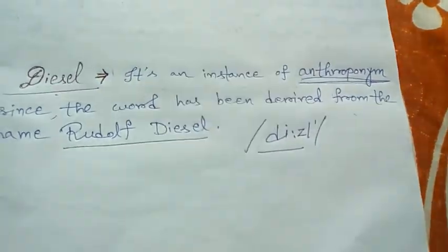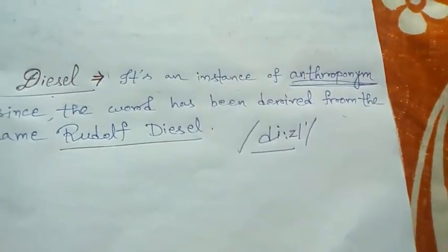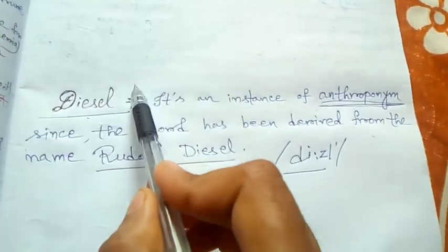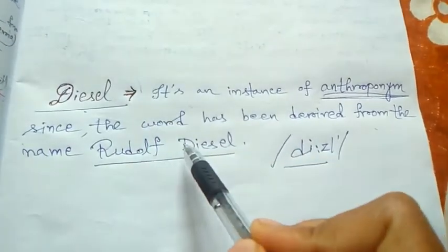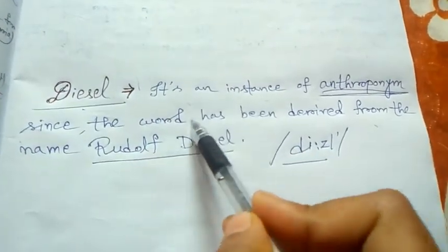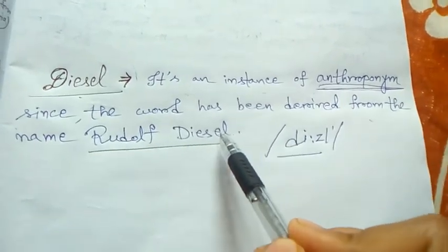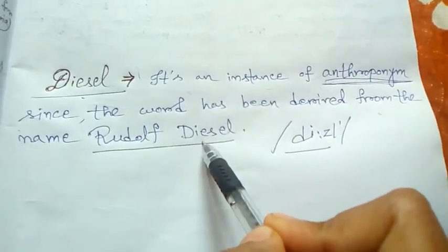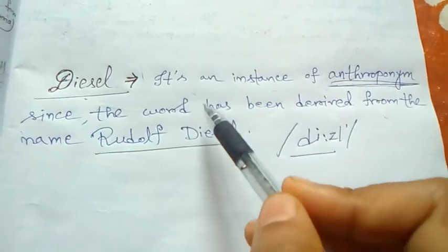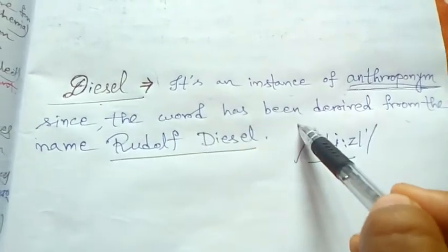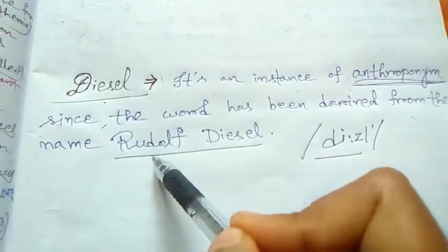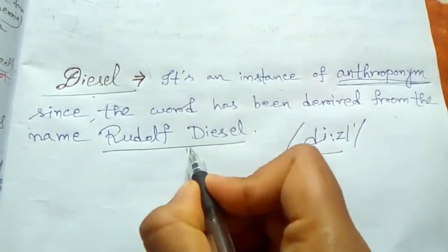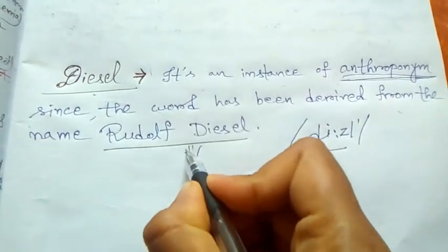An anthroponym is when the invention's name matches the name of its inventor — these two things are the same. Here, the word 'diesel' has been derived from the name of Rudolf Diesel, who was the inventor.